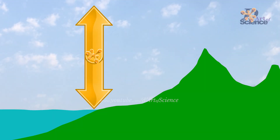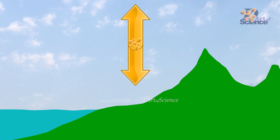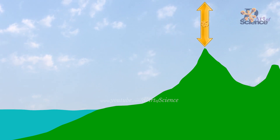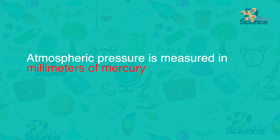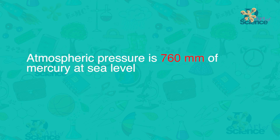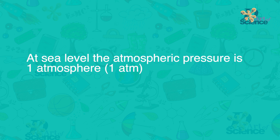Atmospheric pressure is highest at sea level and as you go higher, say on a mountain, the atmospheric pressure is lower. This is because the amount of air above us is much more at sea level and it keeps decreasing as we go higher. The SI unit of pressure is pascal, but atmospheric pressure is also measured in millimeters of mercury — it is 760 mm of mercury at sea level, which is called one atmosphere. A barometer is the device used to measure atmospheric pressure.